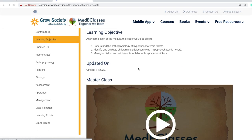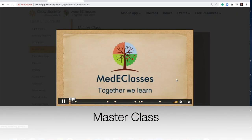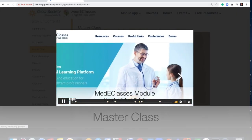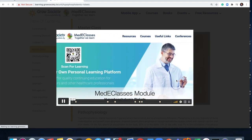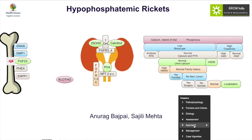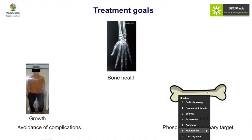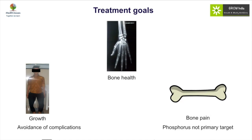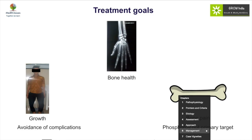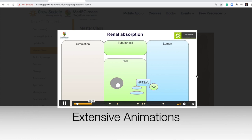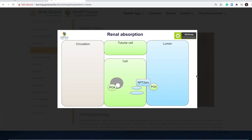All these chapters start off with a learning objective and they have a master class, which basically covers the entire aspect of that particular topic. You can view it on mobile, iPad, or tablets. You can go individually to a particular section — so if you want to just go directly to management of hypophosphatemic rickets, you can do that. Each module is classified into different sections that include pathophysiology, pointers, criteria, etiology, assessment approach pathway, and a management pathway.